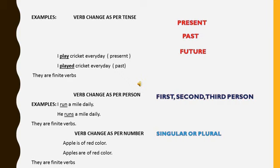Second heading is verb changes as per person. As you can see, first person, second person, third person. So here are examples: I run a mile daily. When we change, he runs a mile daily. So they are finite verbs.